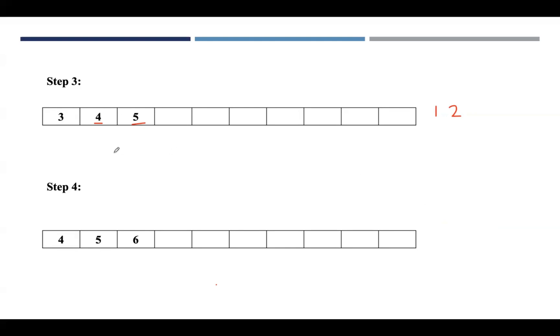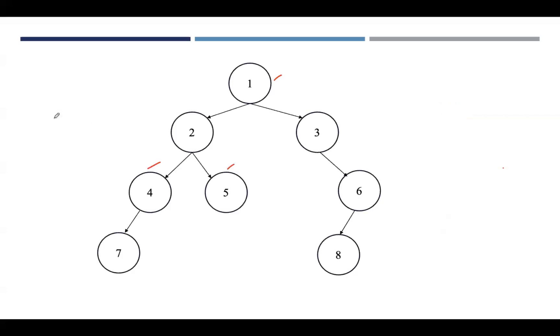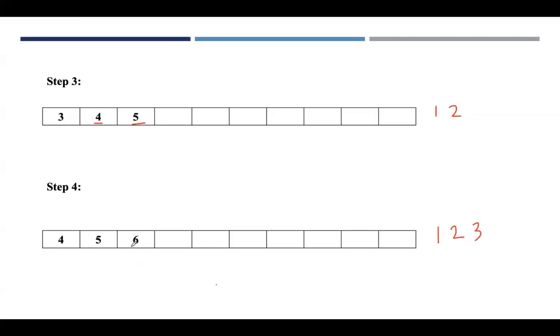Now pop the next element from the queue, which is 3, since we are following first in first out. Pop 3 and find out adjacent vertices of 3. The queue already has 4 and 5, so 3 has only one adjacent vertex which is 6. Insert that 6 at the end of the queue. Now the queue has 4, 5, and 6. The next element to be visited is 4, so pop 4 and print it.